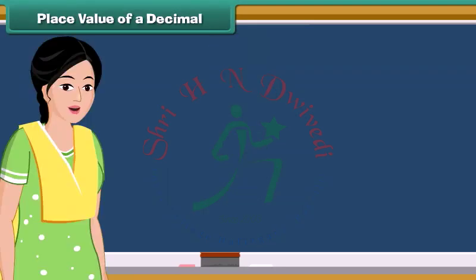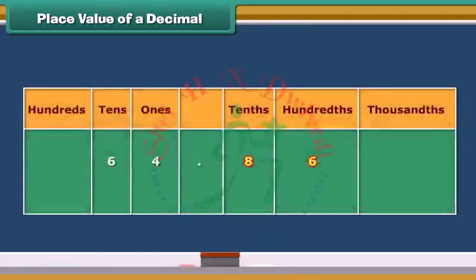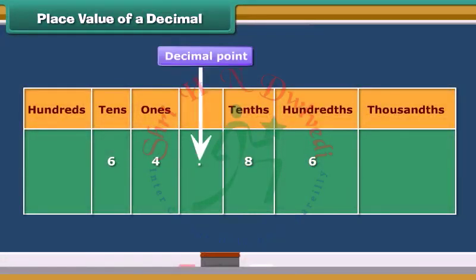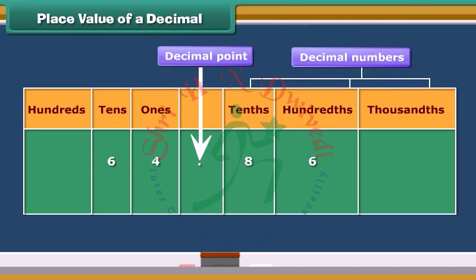Well, writing the decimals is pretty easy. Numbers to the right of the decimal point are decimals. The place values are tenths, hundredths, thousandths and so on.